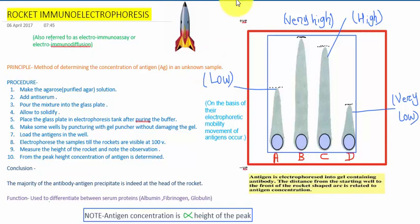Let's summarize. Make the agar gel, add the antiserum over it, let it solidify, then put the agar plate into the electrophoresis tank with buffer solution. Then make some wells and pour the antigen solution with different concentrations, then electrophorese it till you see the rockets. Then measure the height of the rocket and note the observation. The antigen concentration can be determined from the peak height. The highest peak means the highest concentration.